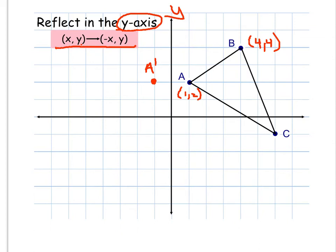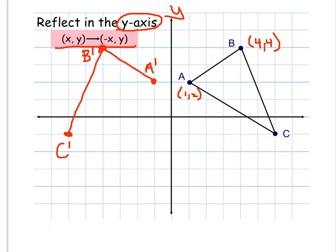B is 4 units to the right of the y-axis, so it's going to reflect 4 units to the left — that will be point B prime. Same thing for C: C is 6 units to the right, so 6 units to the left is going to be the reflection. You'll notice when you reflect over the y-axis, the points don't move at all up or down — they are just being reflected left or right. In this case, all of the points were reflected from the right side of the y-axis to the left side.